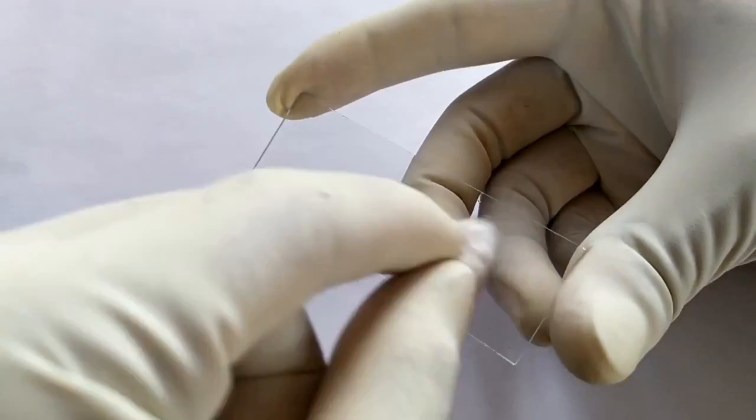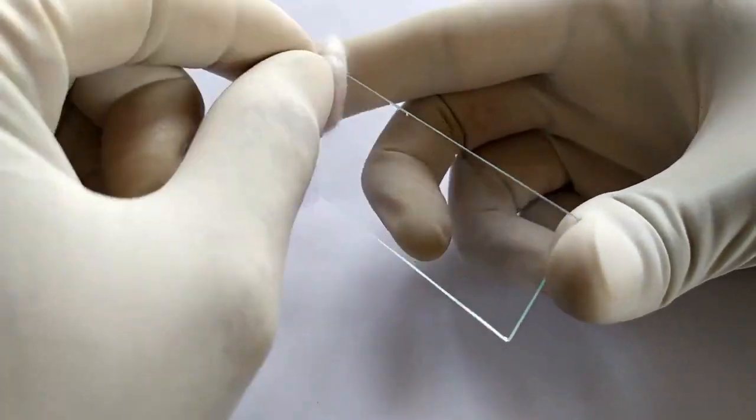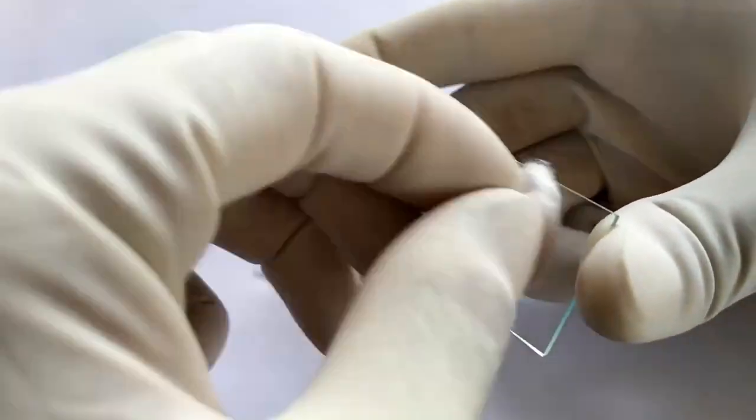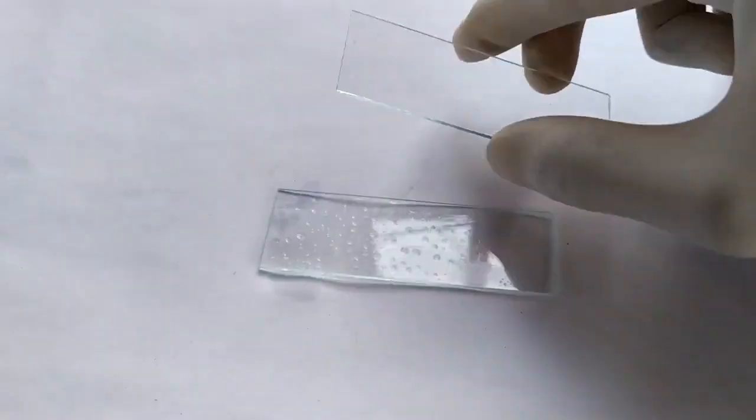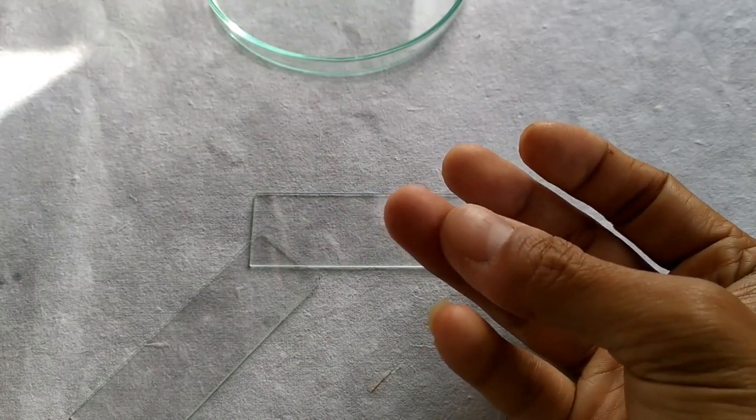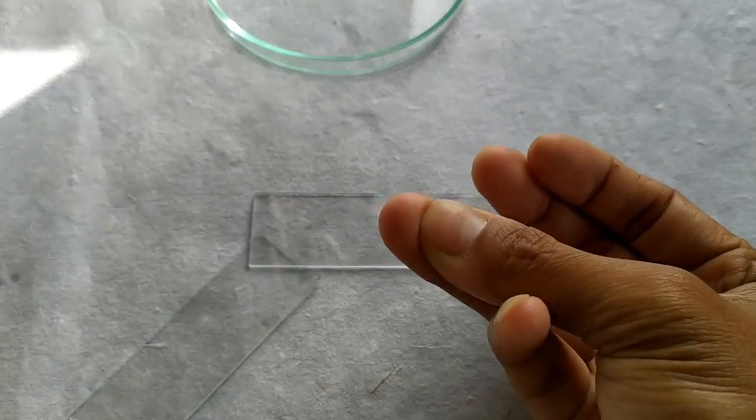Take two glass slides and clean them with 90% alcohol. Disinfect a finger with alcohol and prick with a sterile lancet or a pricking device.